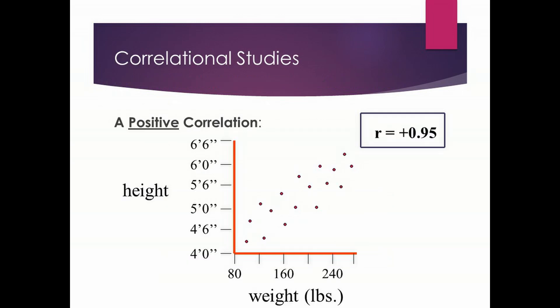Now let's get into correlational studies. I am showing you what is called a scatter plot, which is a way of visualizing the results of a correlational study — all one word, probably named this way because a plot is a graph. Looking at the scatter plot, you have height on the vertical axis ranging from four feet to six and a half feet, and weight across the horizontal axis ranging from 80 to more than 240 pounds. I made up these data — let's say they represent a group of preteen females, and each dot represents information for one person.